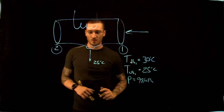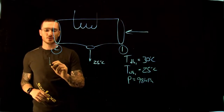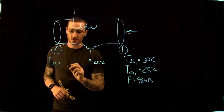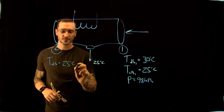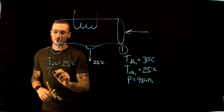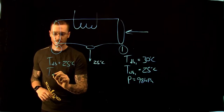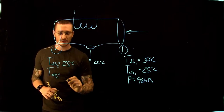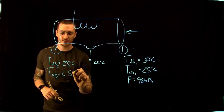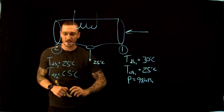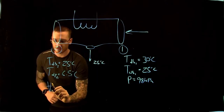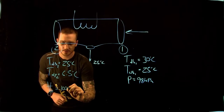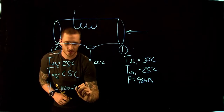At point 2 (the exit), the dry bulb temperature is 25°C, the dew point temperature is 6.5°C, and our volumetric flow rate is 1000 meters cubed per minute.